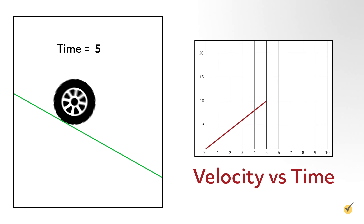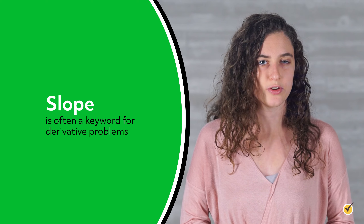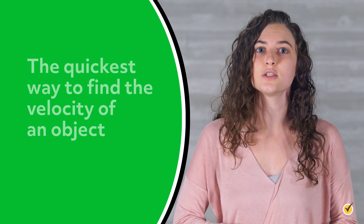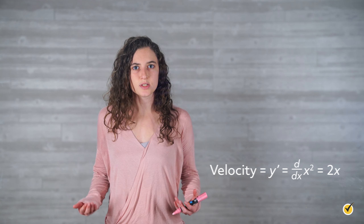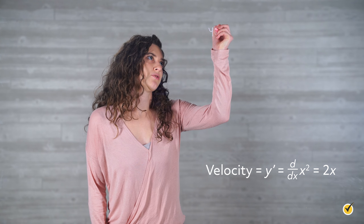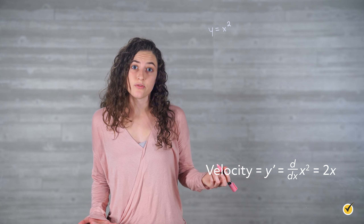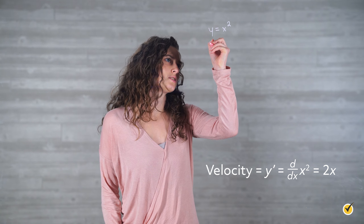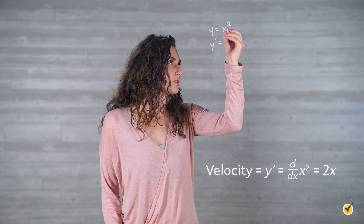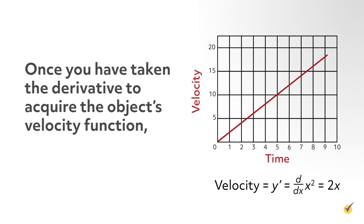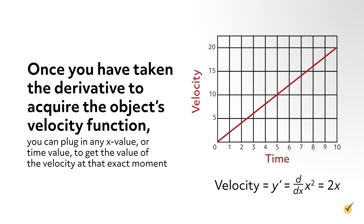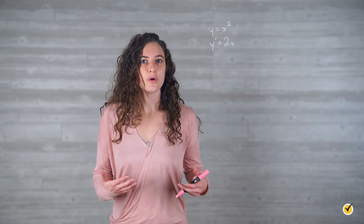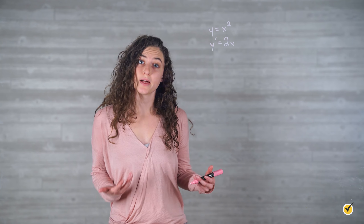This concept can even be applied when a position function is not a straight line. For example, if a tire starts rolling down a hill and has the position function y equals x squared, where x represents seconds passed and y represents feet traveled, then we can find the tire's velocity at any given time by finding the slope of the position function at that time. From our study of calculus so far we understand that slope is often a keyword for derivative problems, so it should come as no surprise that the quickest way to find the velocity of an object from its position function is by taking the derivative of the position function. Since the tire's position function is y equals x squared, its velocity function is equal to its derivative — so velocity is equal to y prime, which is the derivative of x squared, which is 2x.